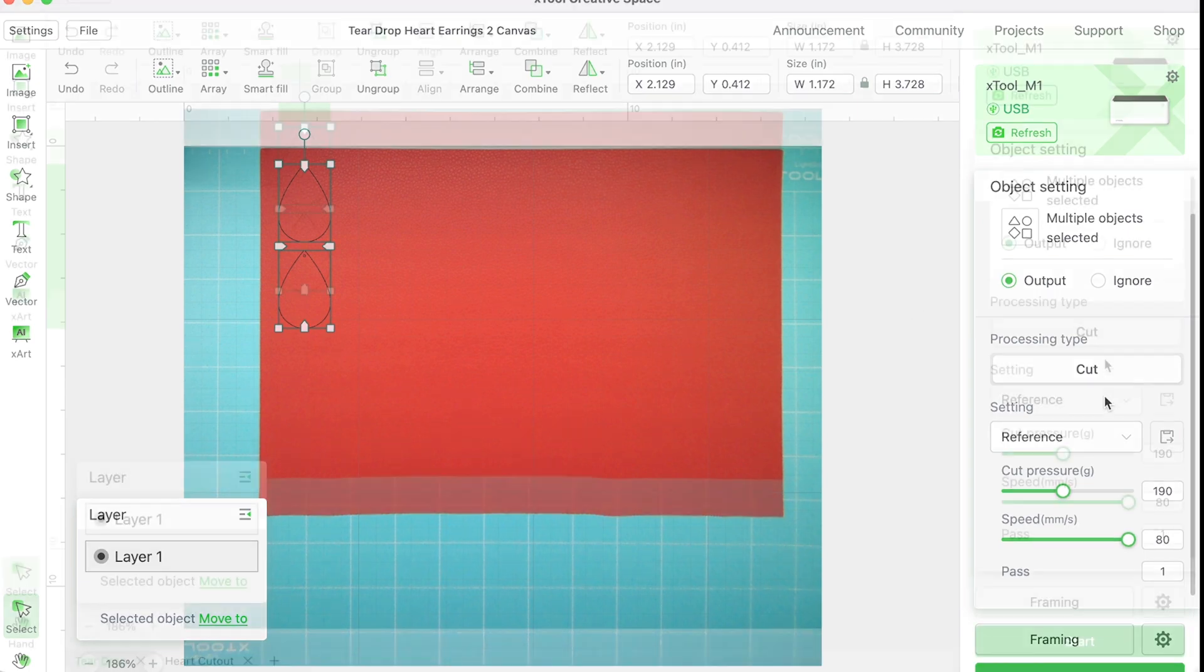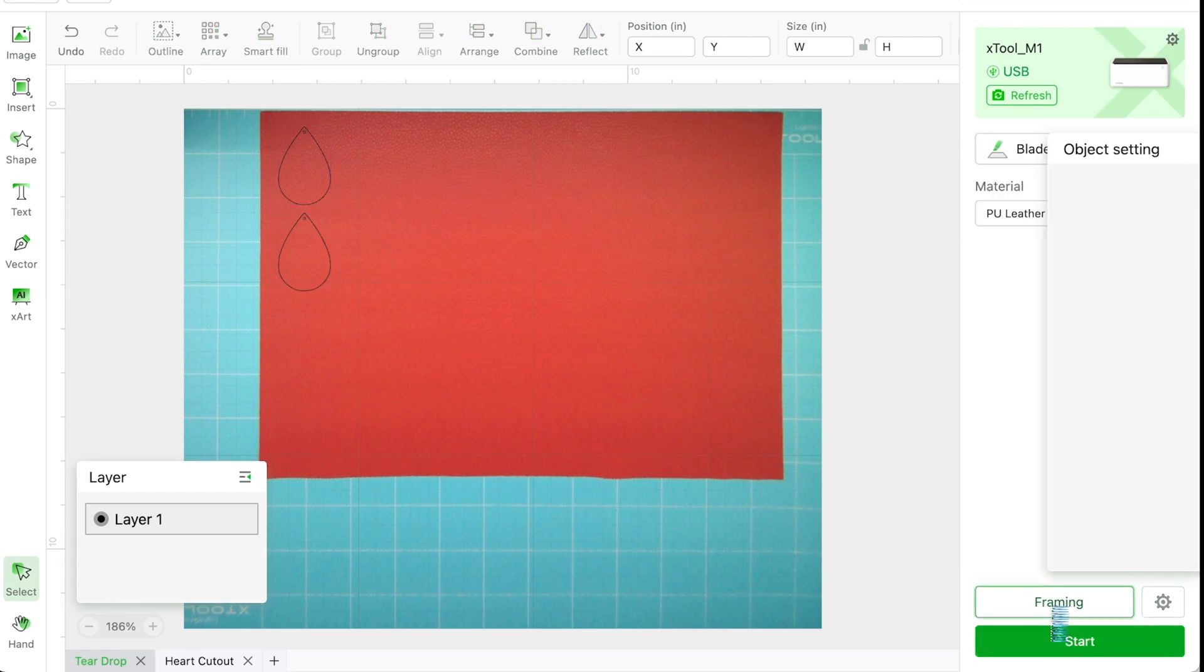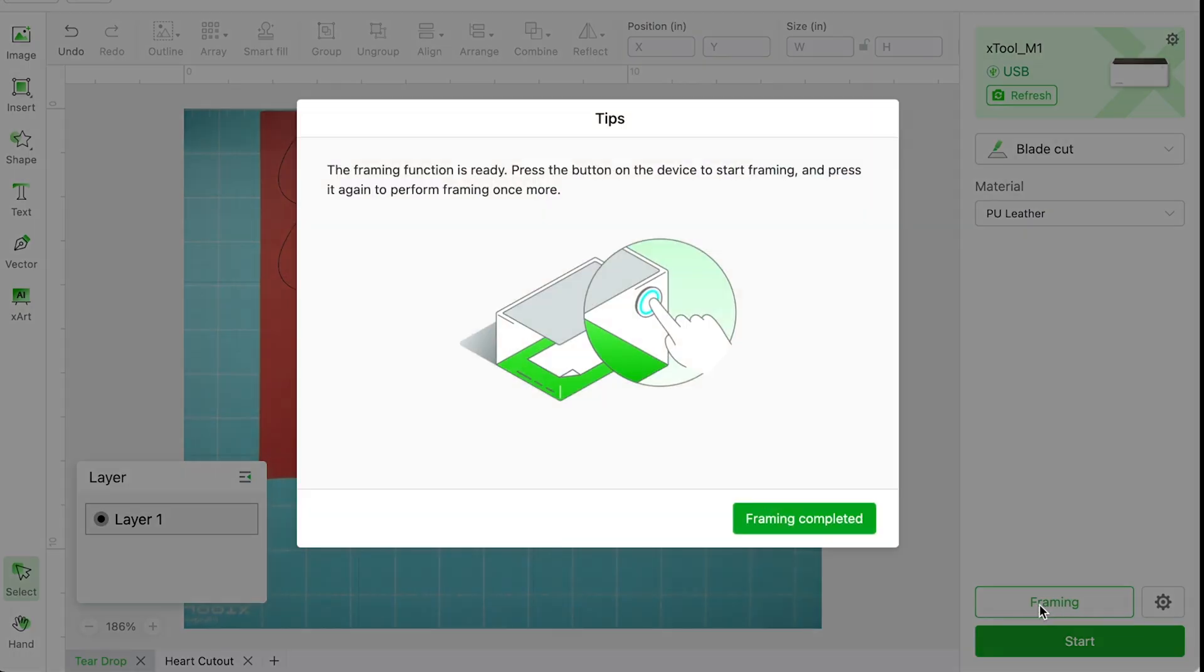I'm going to select blade cut and PU leather and now I don't know how to get that menu back. Ah there it is. It's telling me it's going to cut. It's using the reference material from x-tool. Now framing I'll show you that in just a second. It's more impressive on wood so I'm going to set that aside for now.